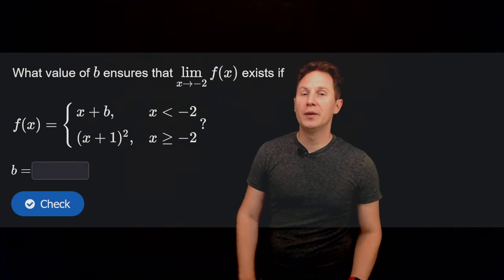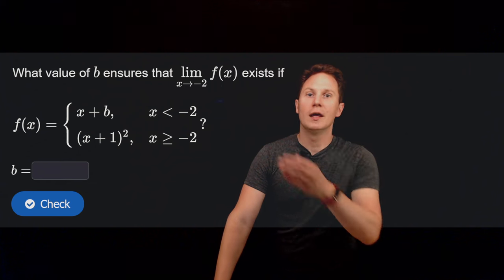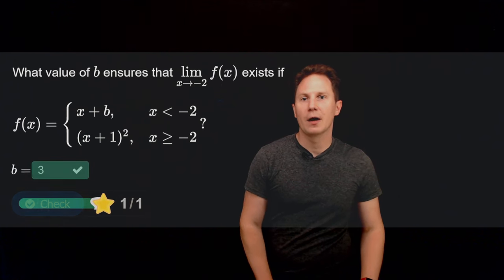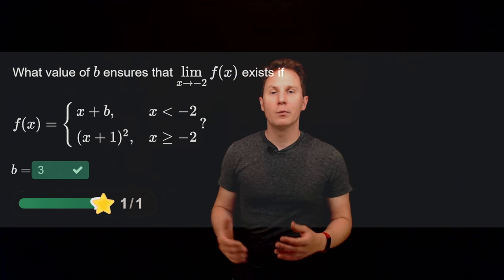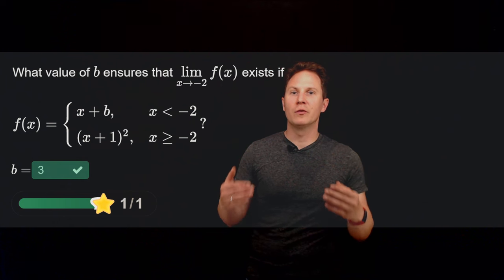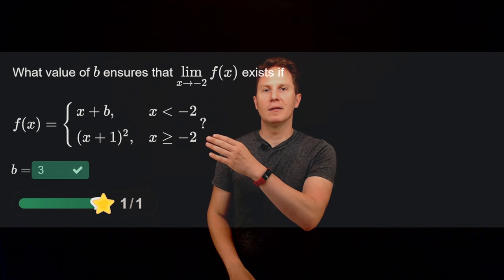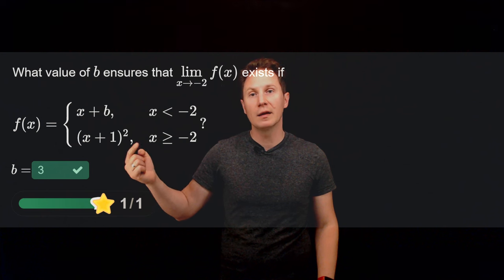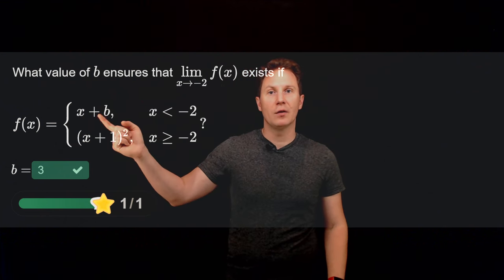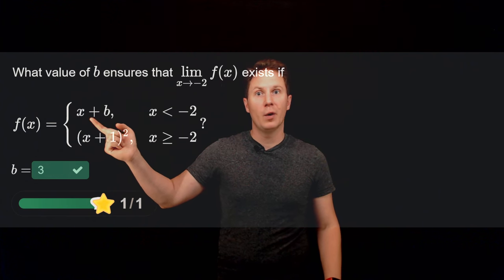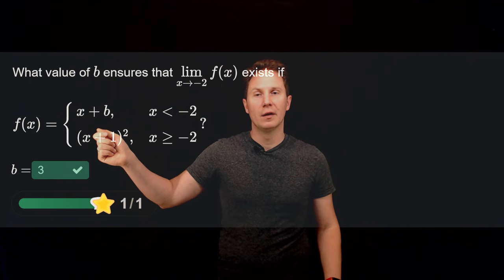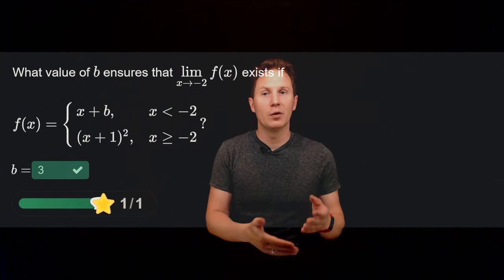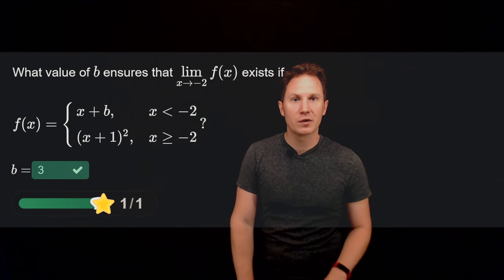What value of b ensures that the limit as x approaches negative 2 of f(x) exists, if f is defined in this piecewise way? We ensure the one-sided limits match at x equals negative 2. The right-hand limit: plug in x equals negative 2 to get (negative 2 plus 1) squared, which is (negative 1) squared, which is positive 1. So the left-hand limit of x plus b as x approaches negative 2 must also equal 1, giving negative 2 plus b equals 1, so b equals 3.